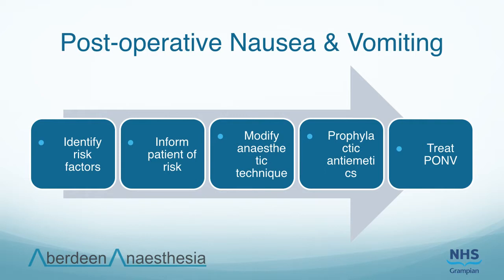In the awake patient, reassurance should be given. Adequate analgesia and hydration should be provided. Surgical causes should be assessed for and ruled out — for example, is the abdomen distended? Antiemetic options include ondansetron, a 5-HT3 antagonist; cyclizine, an antihistamine; prochlorperazine, a D2 antagonist; and dexamethasone, a steroid.